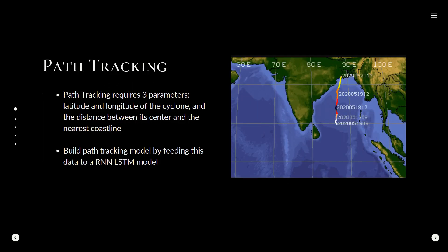After the categorization step, we will also attempt to predict the movement of the cyclone. For this, we will use the latitude-longitude of the cyclone and the distance between its center and the nearest coastline. Satellite images belonging to the same tropical cyclone have a temporal relationship with one another, meaning the estimated path across subsequent images should not change too drastically. Using this, we can produce a dataset to train an RNN LSTM model to estimate cyclone movement.